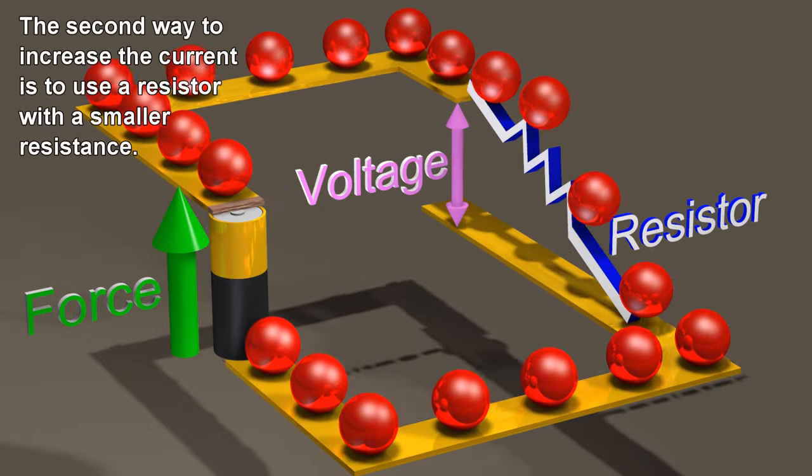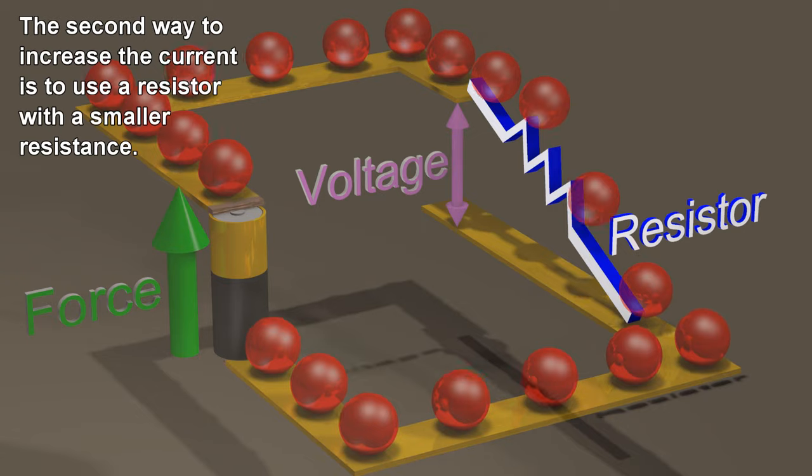The second way to increase the current is to use a resistor with a smaller resistance.